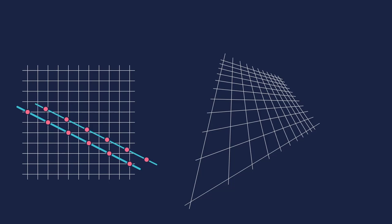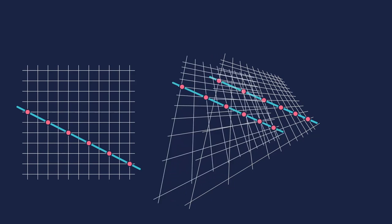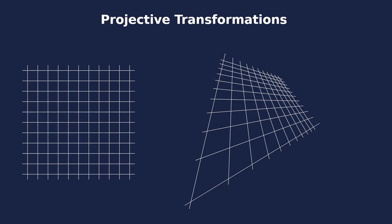We define them as functions that map every point in the plane to another point such that when points are together on a line beforehand, they are still together on a line afterwards. And second, the process can be reversed. We call functions that do this projective transformations.